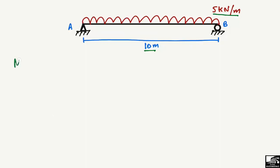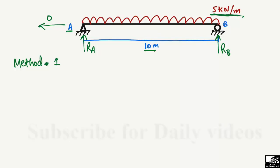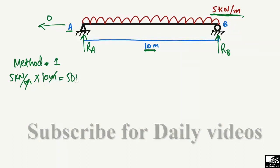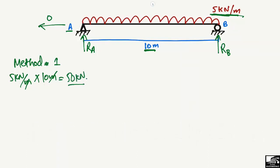Let's start with Method 1 to find the support reaction. At support A, it will take the vertical reaction RA, and since there is no horizontal load, the horizontal reaction is zero. At the roller support B, it will take the vertical reaction RB. In Method 1, we find the total load acting on the beam: 5 kN per meter multiplied by 10 meters gives 50 kN.